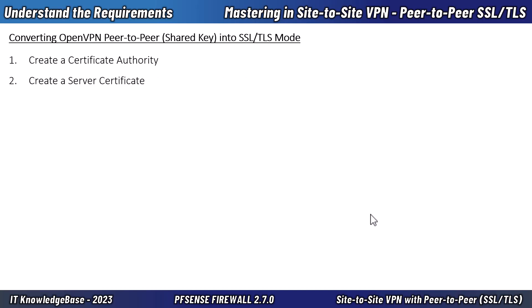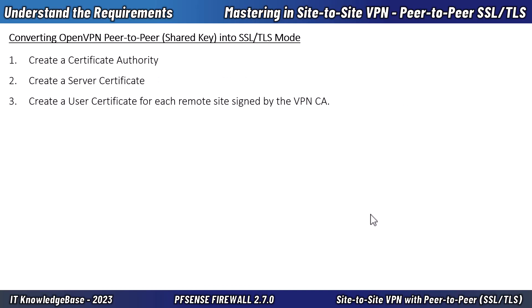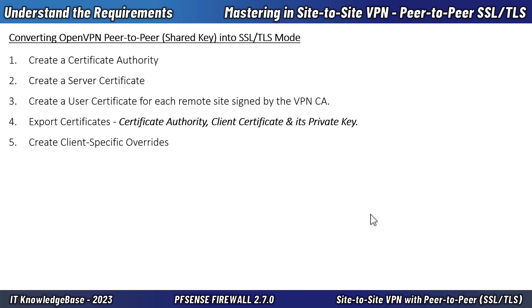First, you have to create a certificate authority. Then create a server certificate. After that, create a user certificate for each remote site signed by the VPN CA. Then export the certificates — the certificate authority, client certificate, and its private key. Create client-specific overrides, which is very important. And last, import the certificate authority, user certificate, and its private key into the branch office or OpenVPN client running in the PFSense firewall.